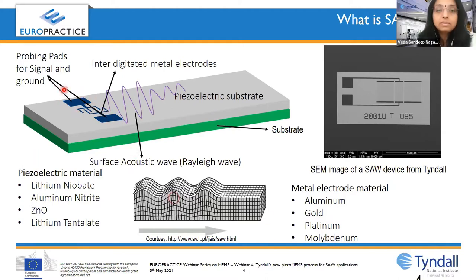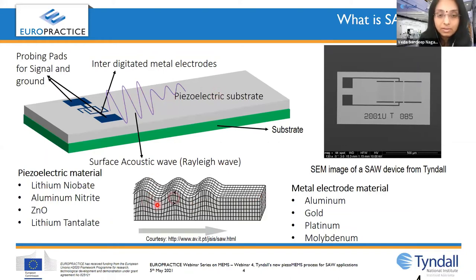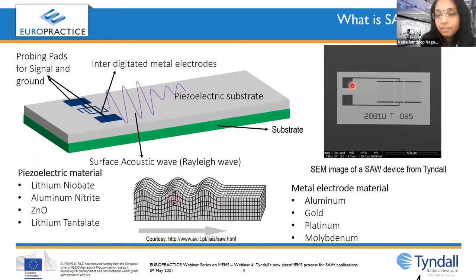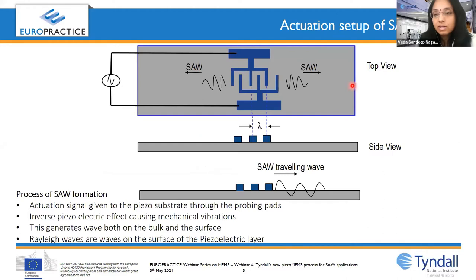Typically what happens is when you pattern these interdigitated electrodes, you pattern it in this fashion with a probing pad area. Once you probe them with an RF signal, a wave is created. This wave propagates on the surface of the piezoelectric film. There are a few waves which go in the longitudinal direction, a few which go in the transverse direction, and so on. What you see in the top right corner is one of the earliest devices that we have been able to fabricate at Tyndall. This is not an optimized process yet, but we are in the process of getting it optimized.